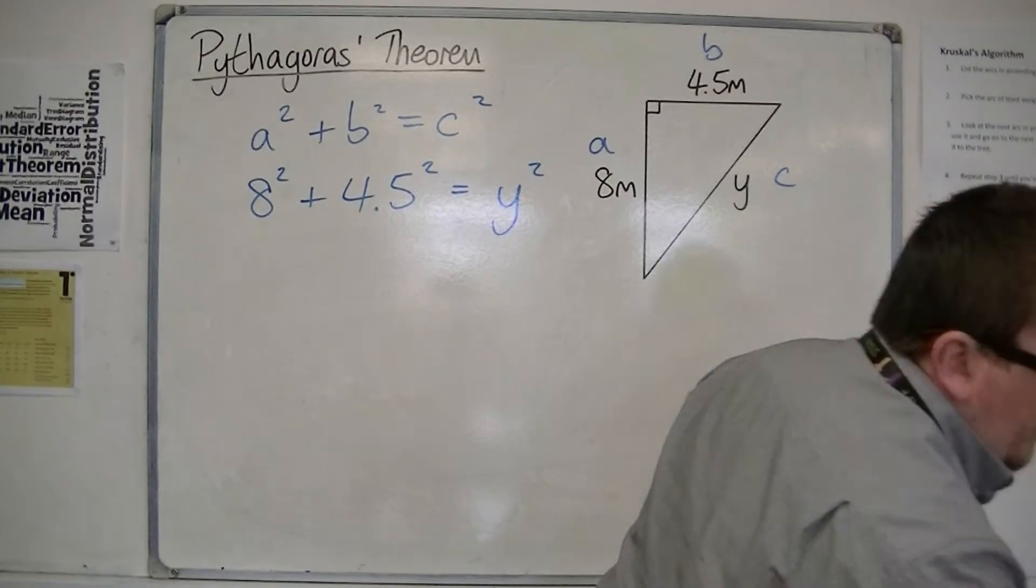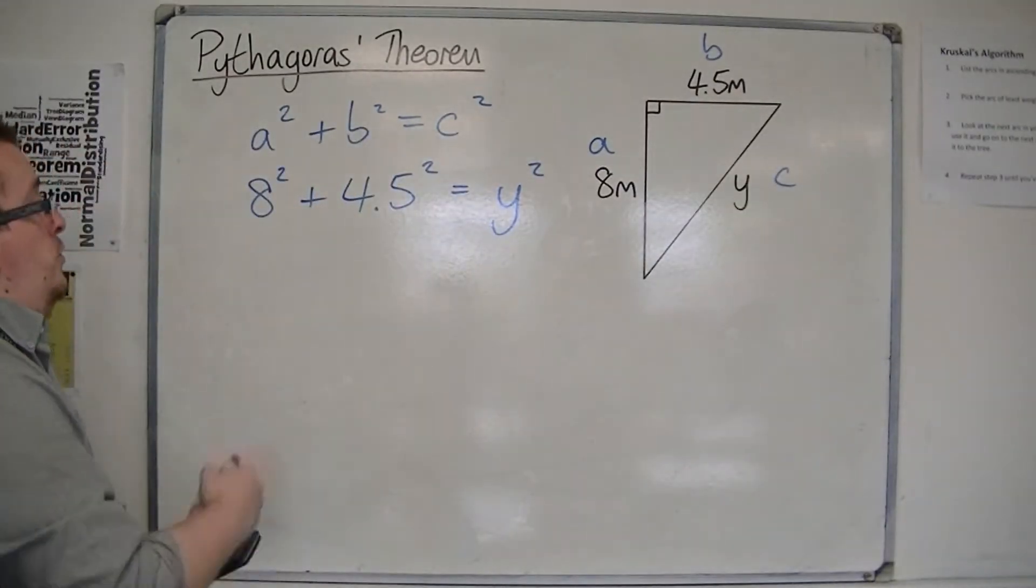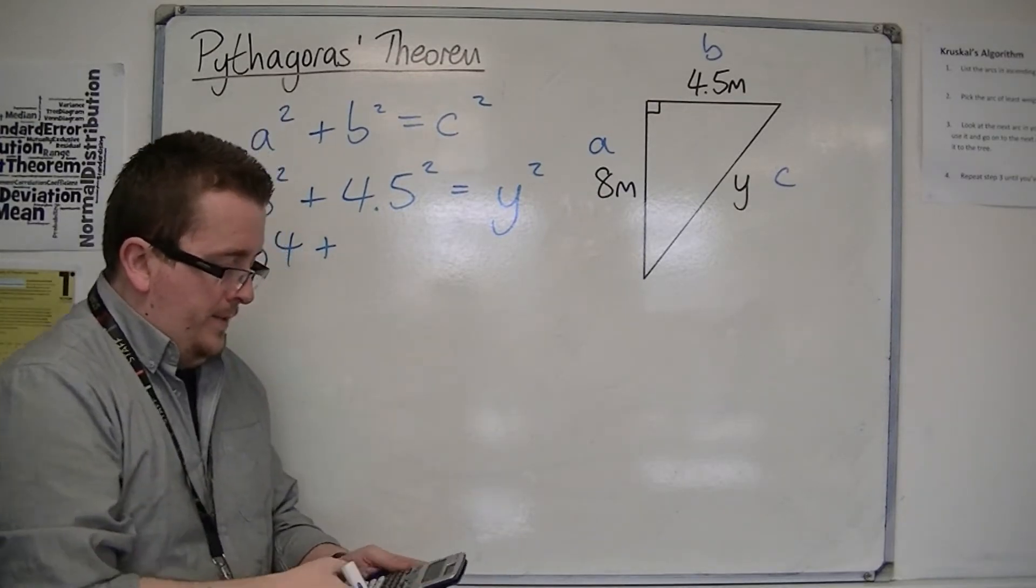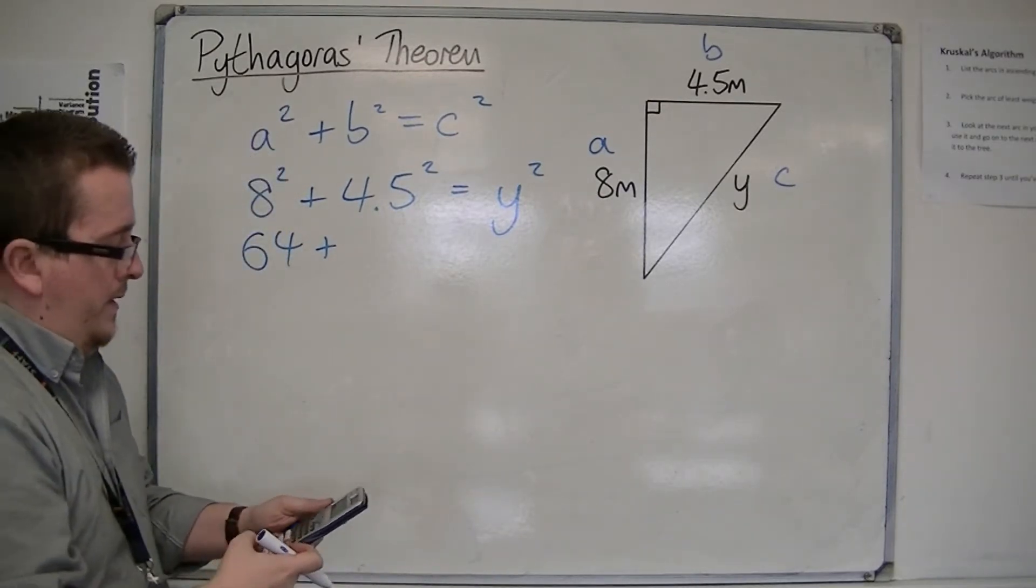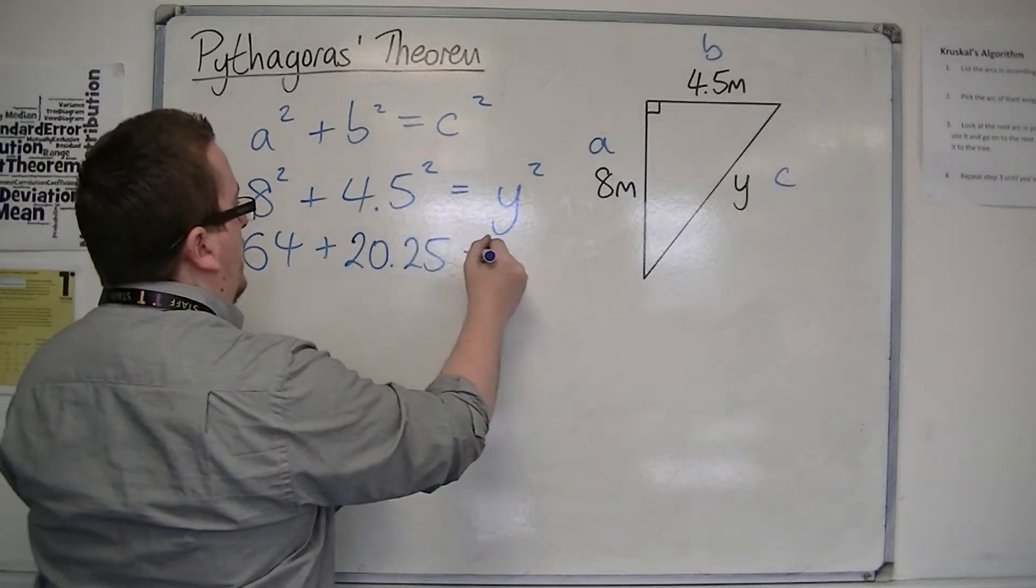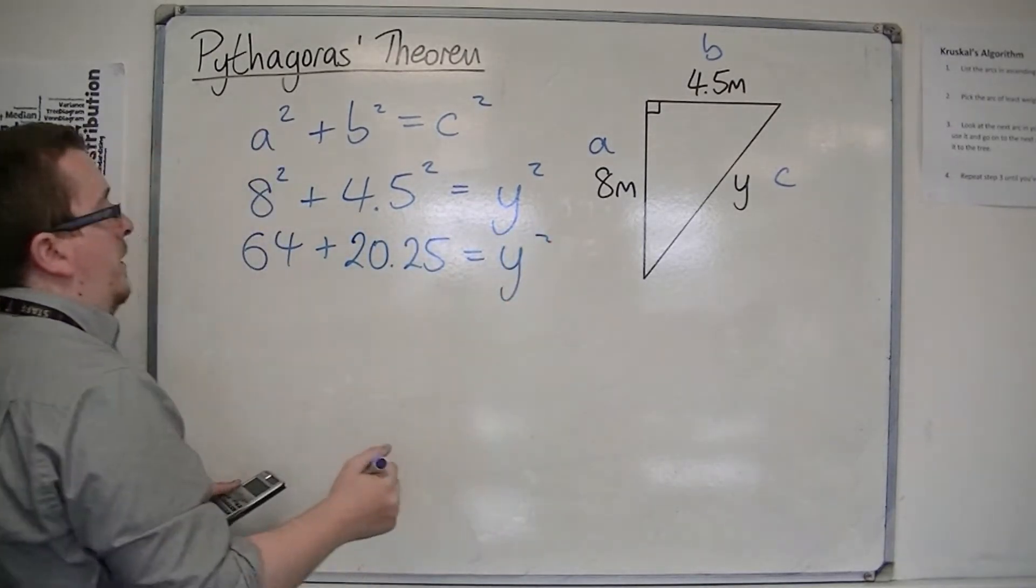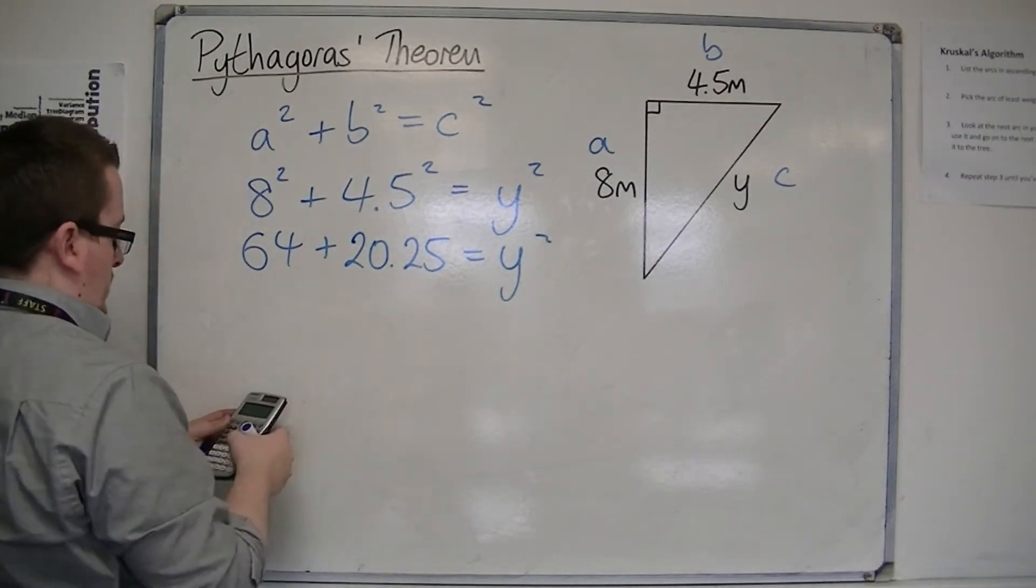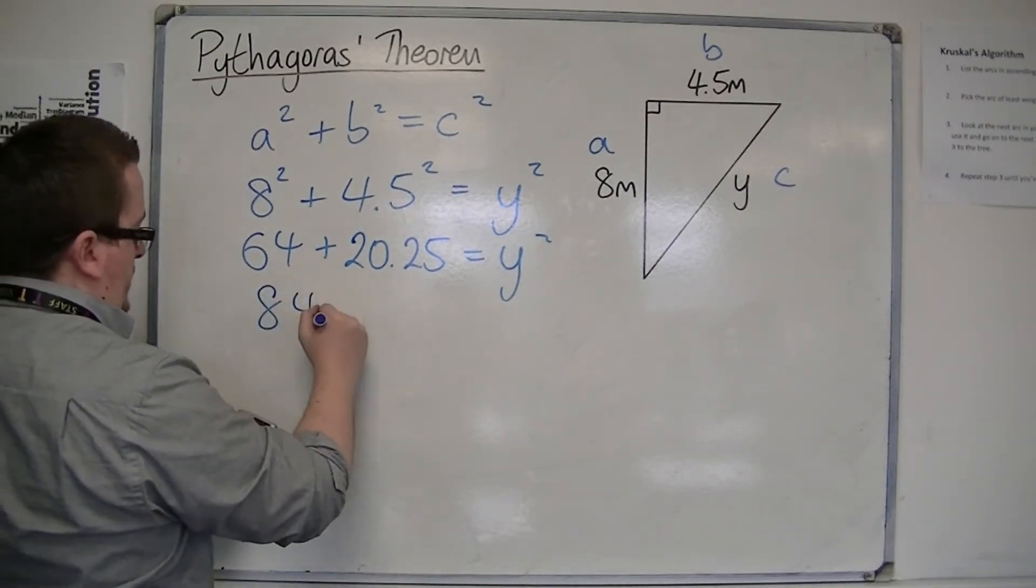So 8², we already know that's 64. Now 4.5², we're going to have to do that on the calculator. 4.5² is 20.25. We add those two together: 64 + 20.25 = 84.25.